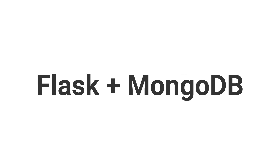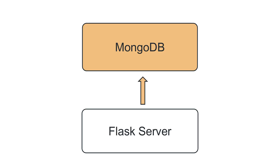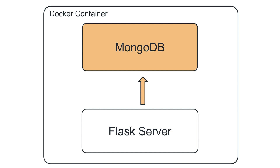When we first think about creating a Flask plus MongoDB application, what comes to mind is that we will create a Flask server where some routes will need to access the database, and for that database we will use MongoDB. The first architecture we visualize is having one Docker container with two things running inside: our Flask server and MongoDB.